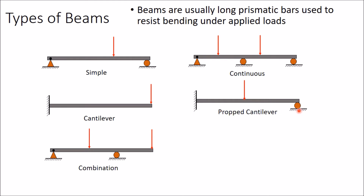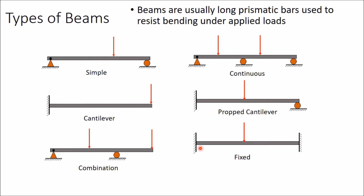This is a propped cantilever beam — in this cantilever beam one extra roller support is provided, so this type of cantilever is called propped cantilever. Third one is a fixed beam: in a cantilever beam the opposite side is also fixed, so this type of beam is called a fixed beam.